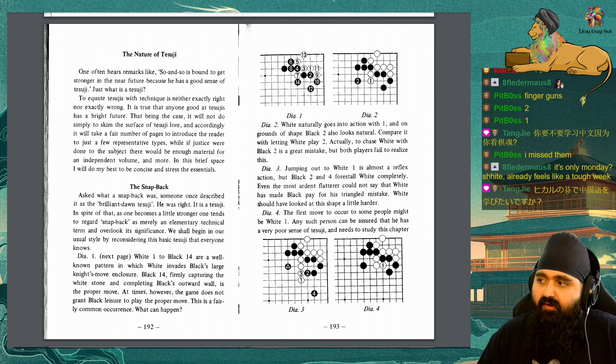Diagram 3: Jumping out to white 1 is almost a reflex action, but black 2 and 4 forced all white completely. Even the most ardent flatterer could not say that white has made black pay for his triangled mistake. White should have looked at the shape a little harder. Diagram 4: The first move to occur to some people might be white 1. Any such person can be assured that he has a very poor sense of tesuji and needs to study this chapter with extra attention.